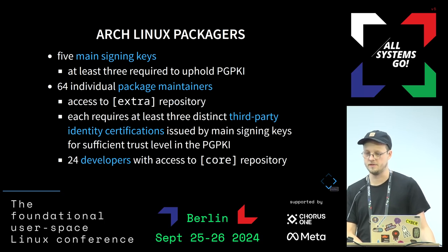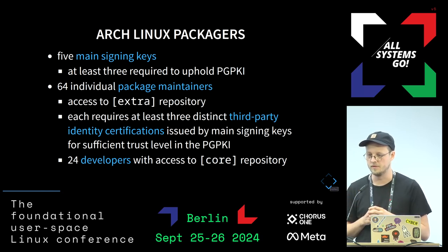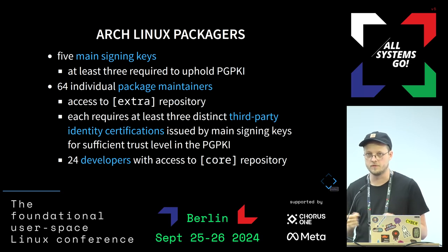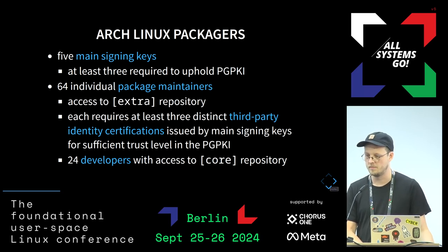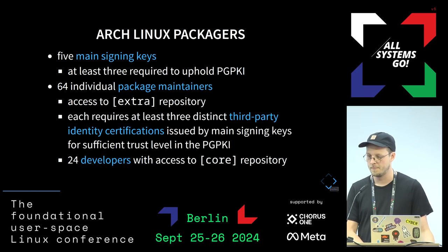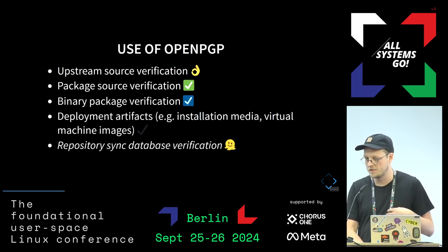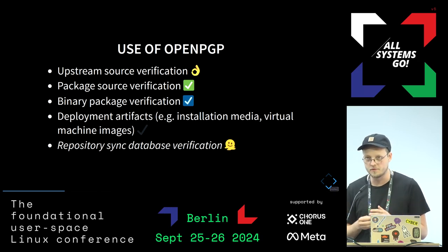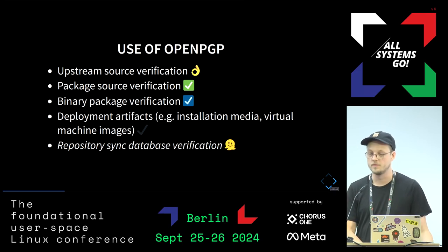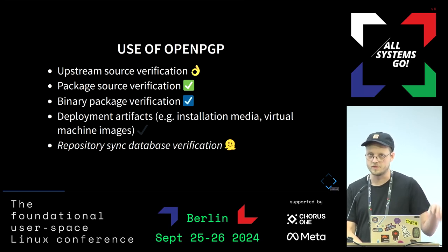When we talk about packaging on Arch, we have to look at how we verify things in more detail. We have five main signing keys that establish this PGP web of trust. By default you need at least three. We have 64 individual packagers able to sign packages with access to the extra repository; 24 of those are developers with access to the core repository as well. We do an okay job with OpenPGP - verifying upstream sources with signed tags etc.